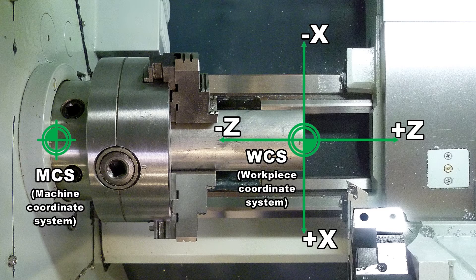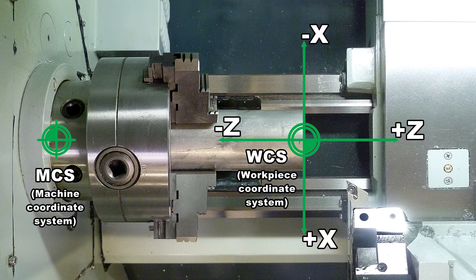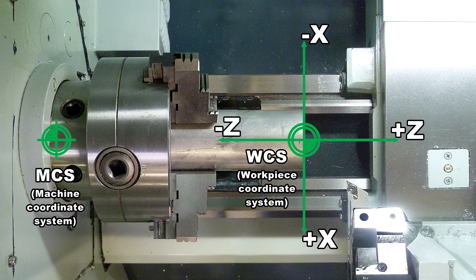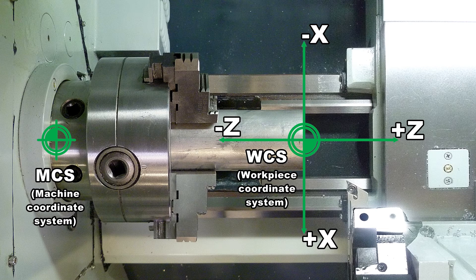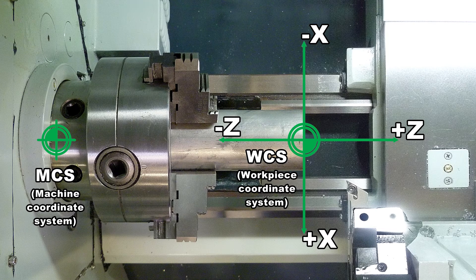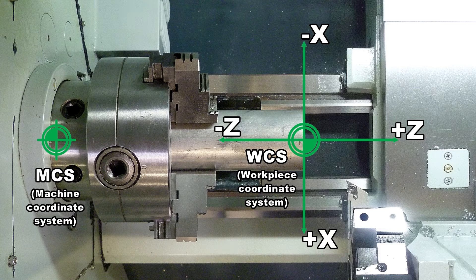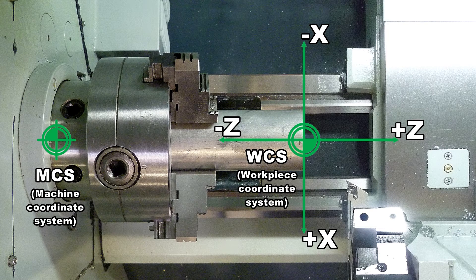The Sinumeric 808D uses a coordinate system which is derived from the DIN 66217 standard. The system is an international standard and ensures compatibility between machines and coordinate programming.